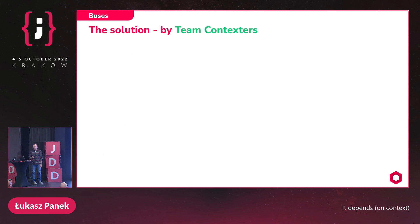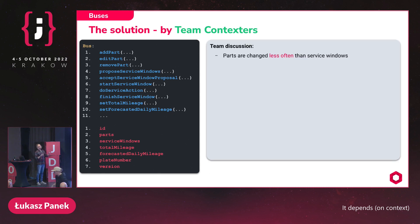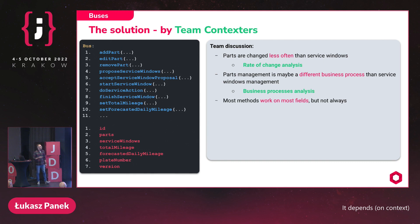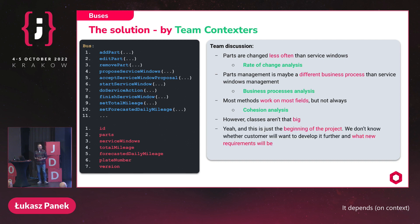Contextors proposed exactly the same design — the same service and aggregate with all the methods — but this decision triggered a discussion. Key observations: parts are changed less often than service windows (rate of change analysis); parts management may be a different business process from service window management (business process analysis); and most methods work on most fields but not always (cohesion analysis). However, someone noted these classes aren't that big yet, and we are just at the beginning of the project. We don't know if the customer will want to develop the system further. So they accepted this design and moved on.